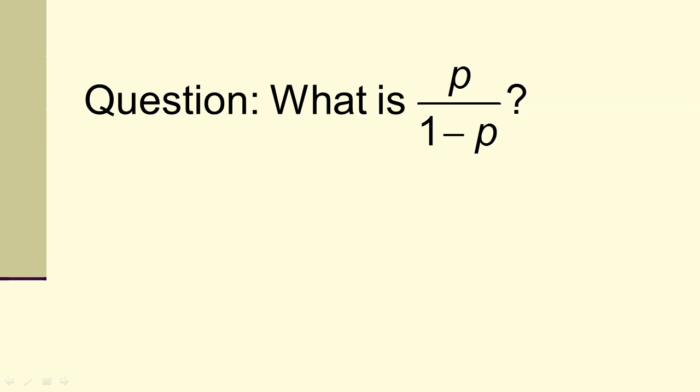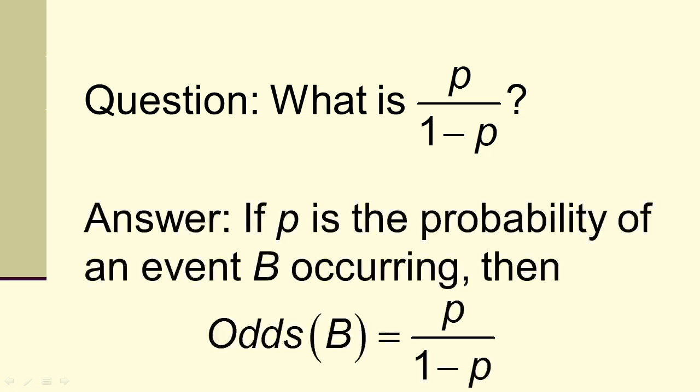But before we do that, what is this P over 1 minus P? Well, it's the probability of an event B occurring. Or if P is the probability of an event B occurring, then P over 1 minus P is the odds of B occurring.